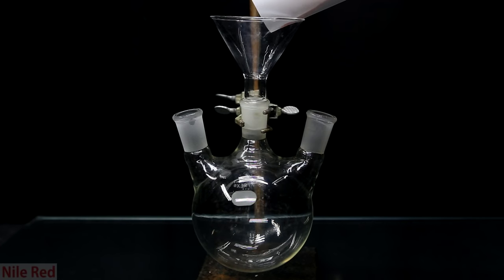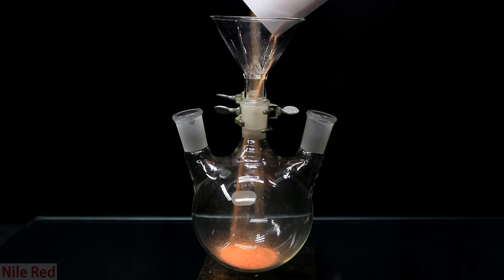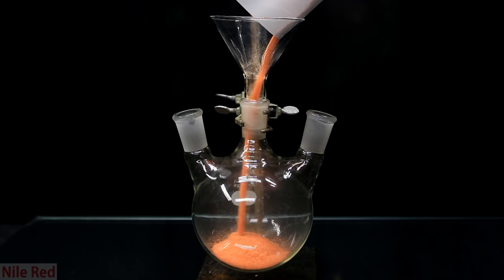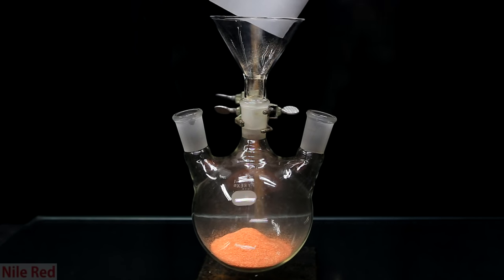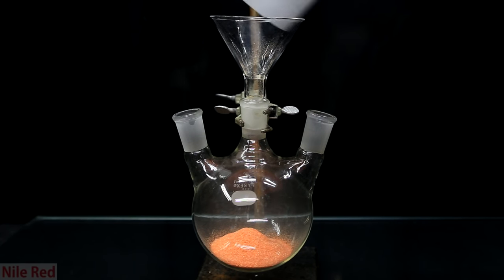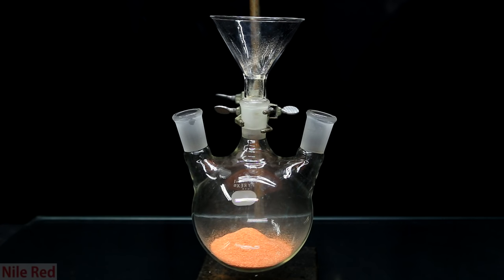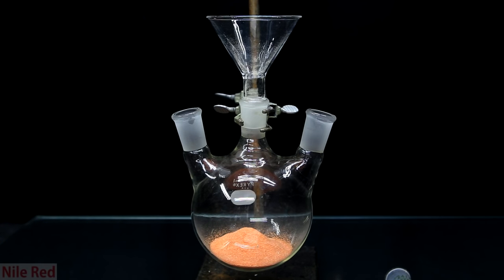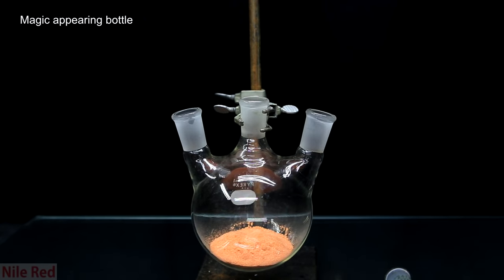Anyway, once it seems like it's a uniform color, I add it to a 3-necked 1-liter round bottom flask. It's important to use a funnel here so none of the powder gets into the ground glass joint, because that would compromise the seal. I then remove the funnel, and I add a stir bar.